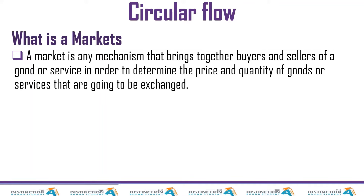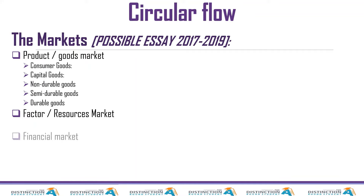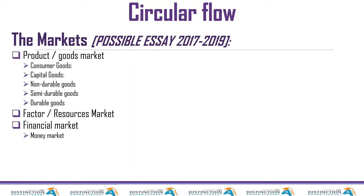First we are going to talk about the product market. According to the exam guidelines, when discussing the product market you have to talk about consumer goods, capital goods, non-durable, semi-durable, and durable goods. The next one is the factor market, then the financial market — in which you need to discuss the money market and capital markets. And then the last one is the foreign exchange market. Let's start with the first one: product market.